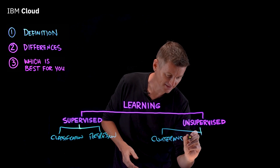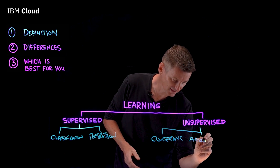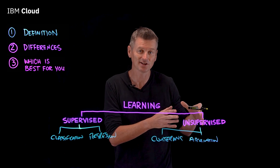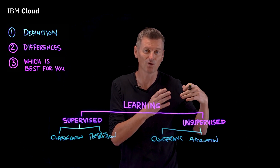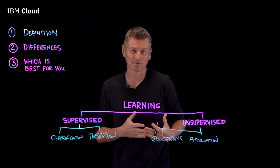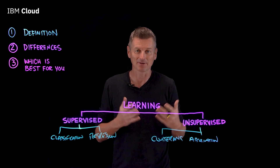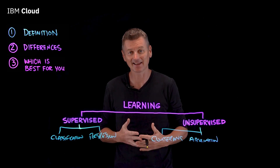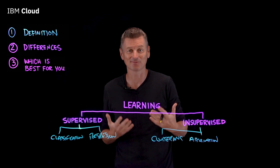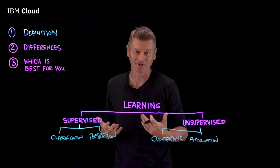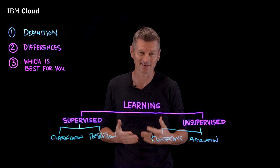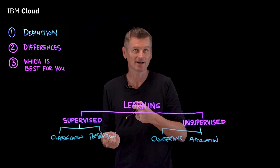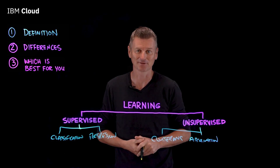Then there is association, where the algorithm looks for relationships between variables in the data. Association rules are often used in market basket analysis, where businesses want to know which items are often bought together — something along the lines of customers who bought this item also bought that sort of thing.